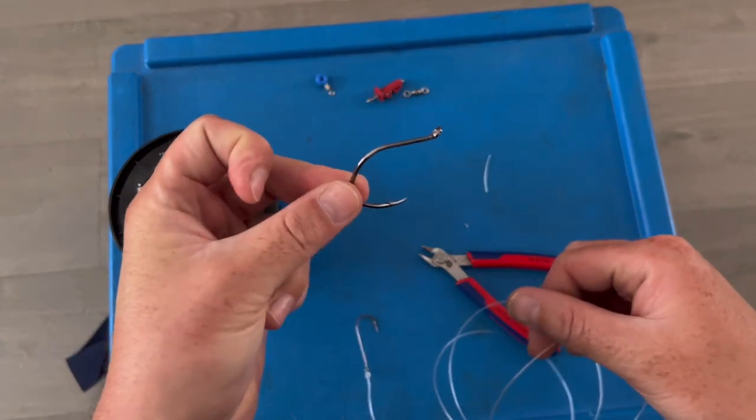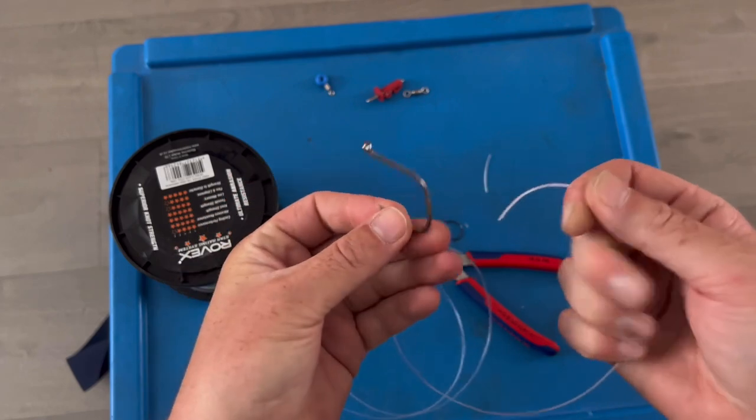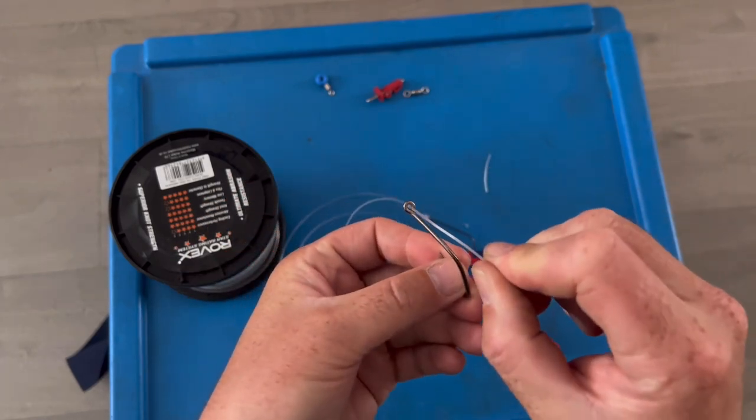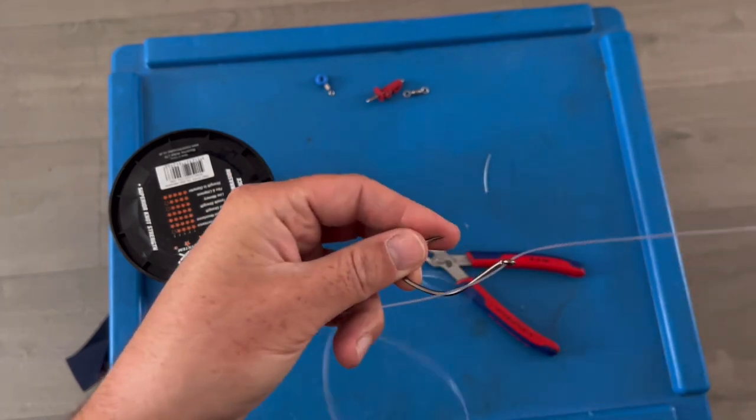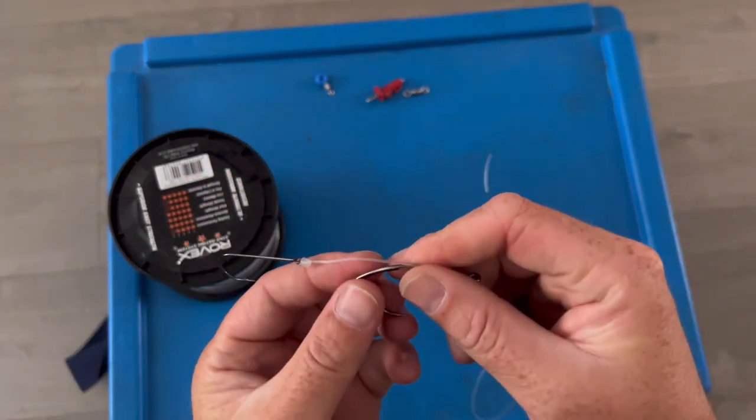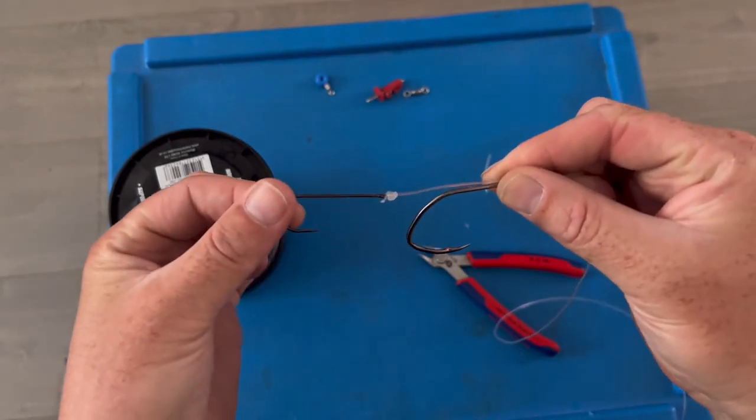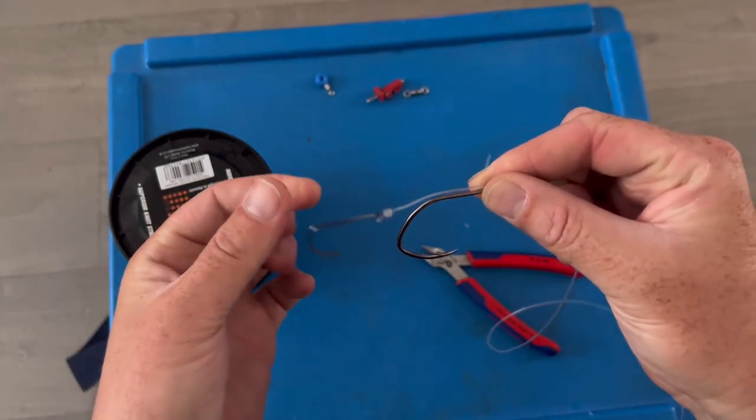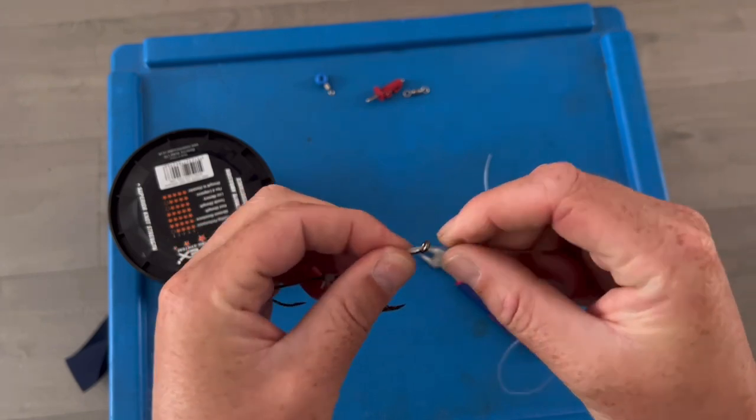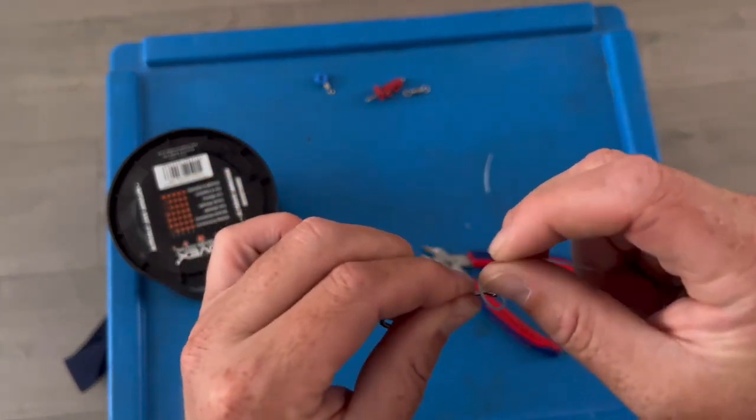That there's a 6.0 catfish hook, so you want to put it in that way. What I do then, if you line it roughly about there, what I do then is you're going to start wrapping the line around the hook now.